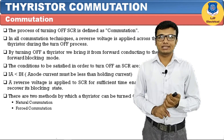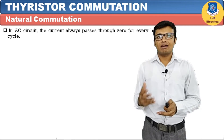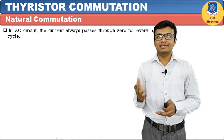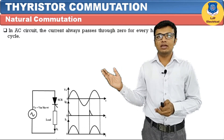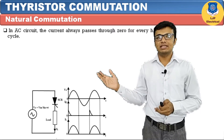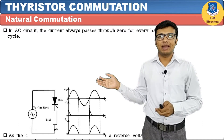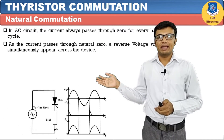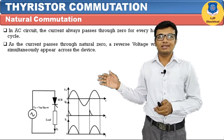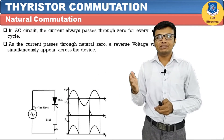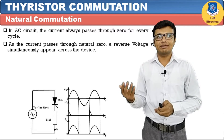In natural commutation on an AC circuit, the current always passes through zero for every cycle. In this circuit diagram, one SCR is connected in series with the load and AC supply V = Vm × sin(ωt) is provided. This is the sinusoidal input waveform having one positive half cycle and one negative half cycle. During one cycle the supply starts at zero, increases to maximum, returns to zero, increases in the reverse direction, and returns to zero again.